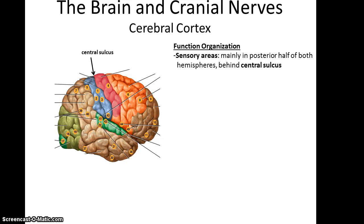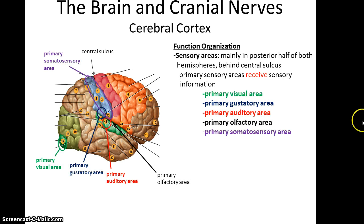The cerebral cortex has two main functions: receiving sensory information and then sending out motor messages. The area posterior to the central sulcus between the parietal and frontal lobes tends to be receiving sensory information. This includes the primary visual area in the very back of the head; the gustatory area and the primary auditory area on the lateral side of the brain; the primary olfactory area within the lateral sulcus; and the primary somatosensory area, which is the postcentral gyrus, where you get a lot of information about what's happening with the bulk of your body.